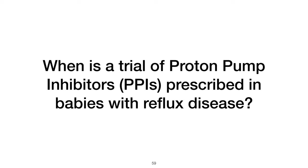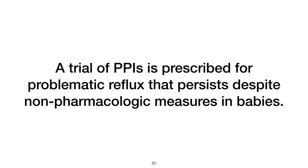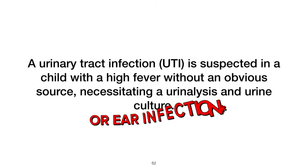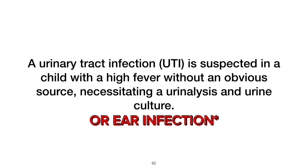When is a trial of proton pump inhibitors (PPIs) prescribed in babies with reflux disease? A trial of PPIs is prescribed for problematic reflux that persists despite non-pharmacologic measures in babies. What is assumed in a child with a high fever without an obvious source? A urinary tract infection (UTI) is suspected, necessitating a urinalysis and urine culture.